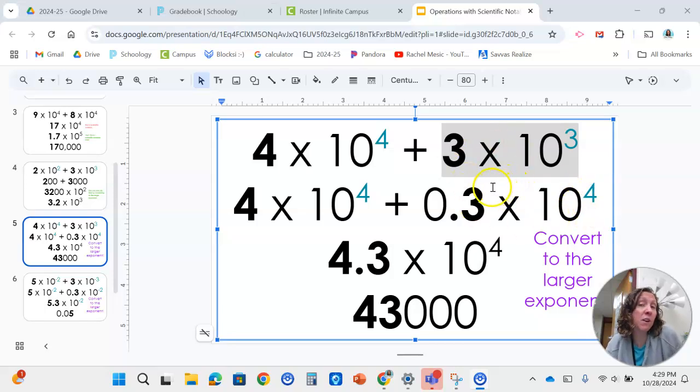They look different, but they're the same. But now when we have an exponent of 4, we can add these two things together. 4 plus 0.3 is 4.3 × 10⁴. So we keep that exponent of 4. And then we could just move that decimal four to the right to get our final answer in standard form.